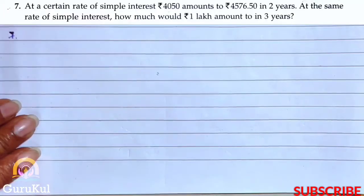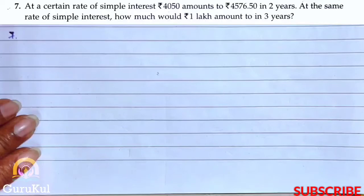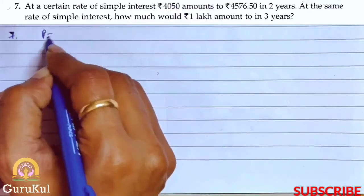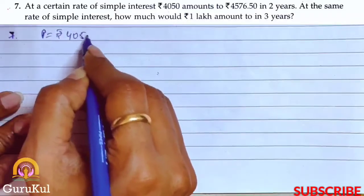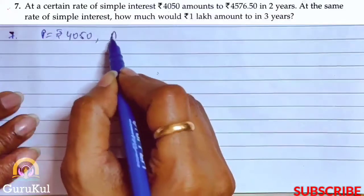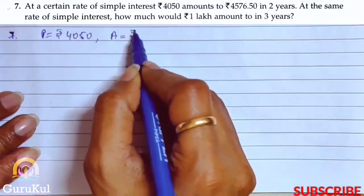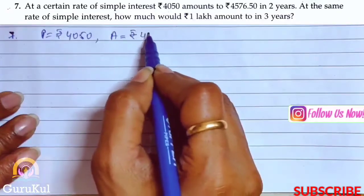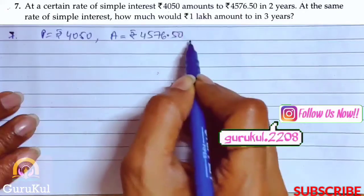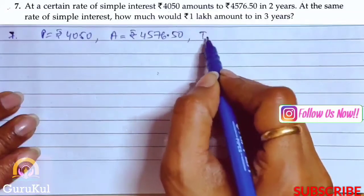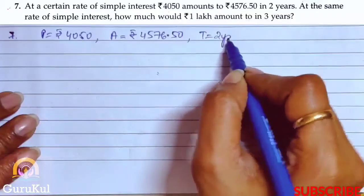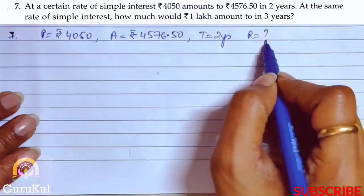Question number 7. At a certain rate of simple interest, Rs. 4,050 amounts to Rs. 4,576.50 in 2 years. So what is mentioned here? Principle is Rs. 4,050, amount is Rs. 4,576.50, time is 2 years. What do we need to find out? Rate.